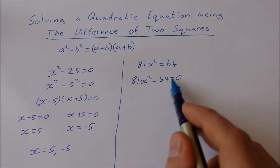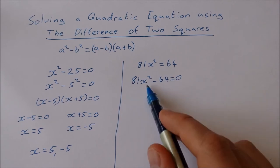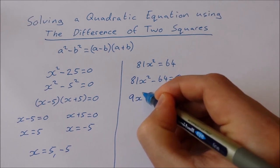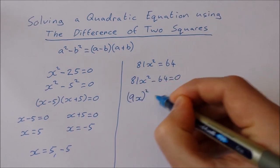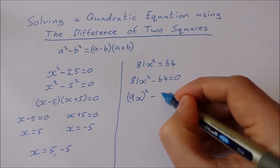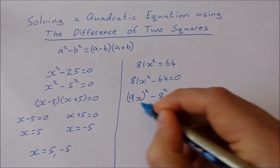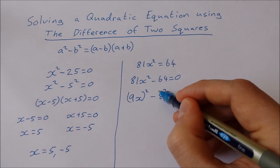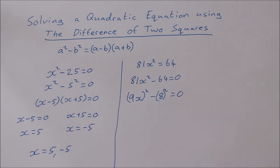Now I'm going to write these as squares. And if you know your square numbers, you'll know that 81 is 9², so that's 9x in brackets squared. And 64 is actually 8², so I can say (9x)² minus 8² equals 0.